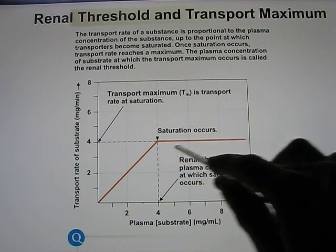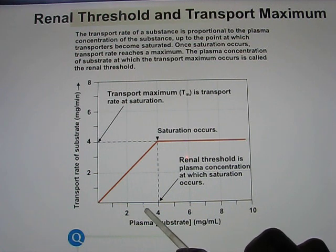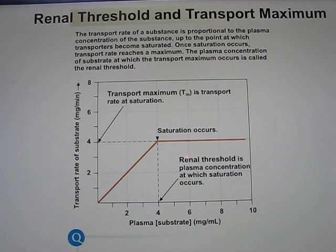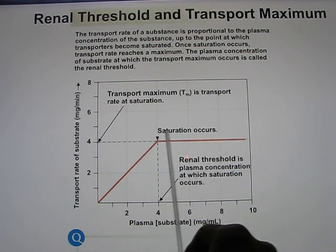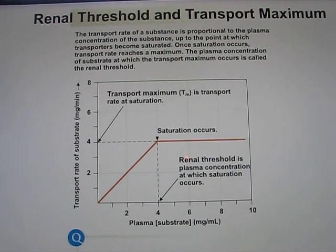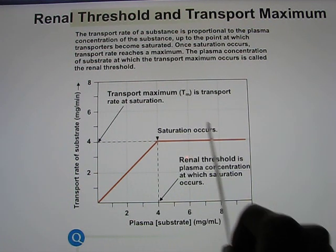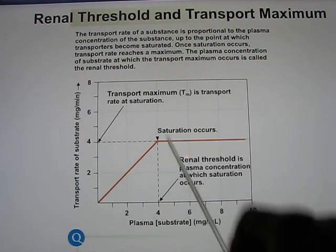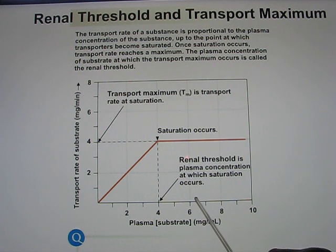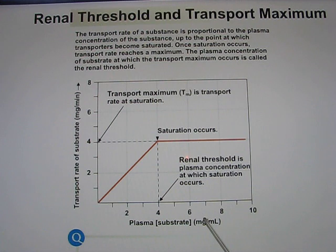Because of transport maximum, we must watch blood sugar levels. For most people this is not a problem because insulin lowers blood sugar after eating carbs, keeping it below the renal threshold. However, in diabetes patients who either lack insulin or are insulin-insensitive, blood sugar can exceed the threshold. Once the transporters are saturated, excess glucose cannot be reabsorbed and shows up in the urine — glucosuria — which is how diabetes was historically detected.